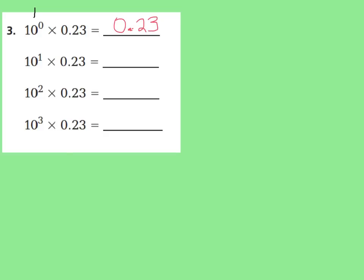Now let's look at the next question. It says the first power of 10 times 23 hundredths. We know the first power of 10 just means one group of 10. Let's write 10 right above it. And 10 times 23 hundredths — we're going to go ahead and write our 23 hundredths, but this time we'll be moving our decimal point from this point to the right. Whenever you multiply by an increased power of 10, you're going to move your decimal point to the right. So 10 times 23 hundredths is 2 and 3 tenths.